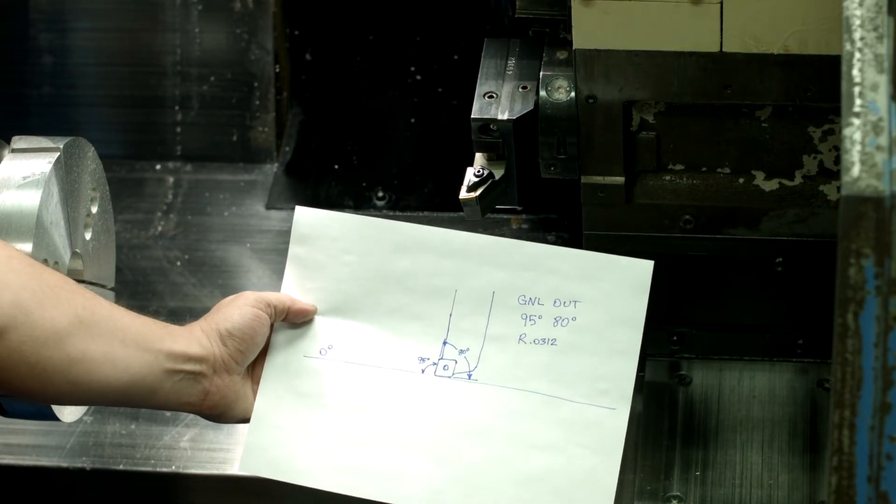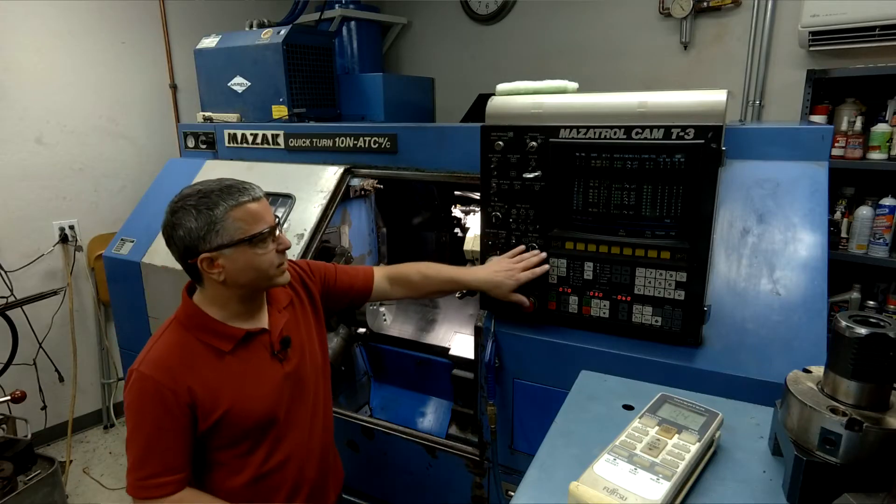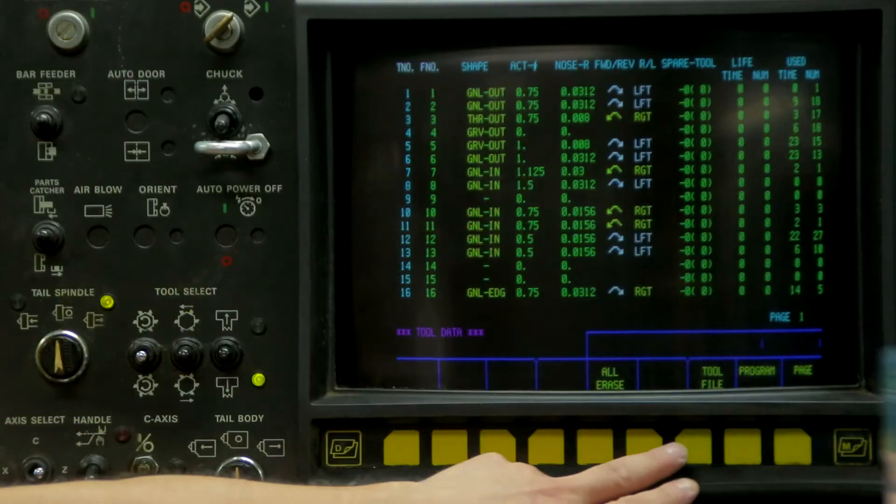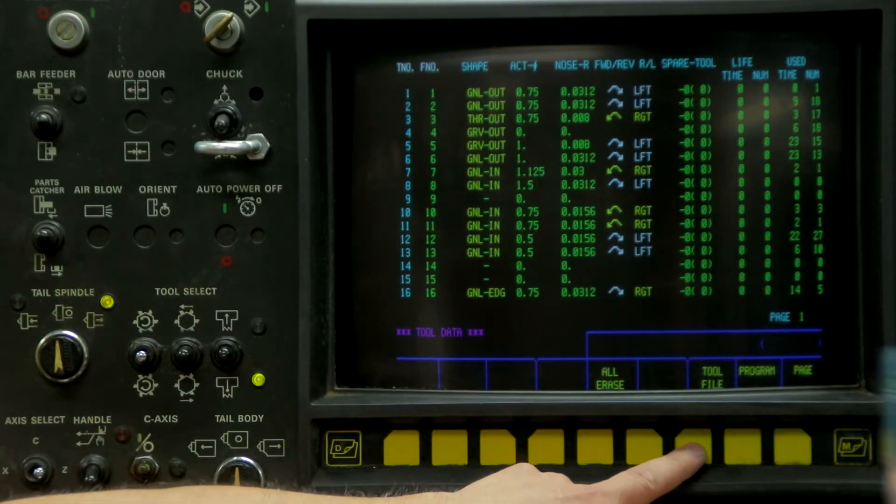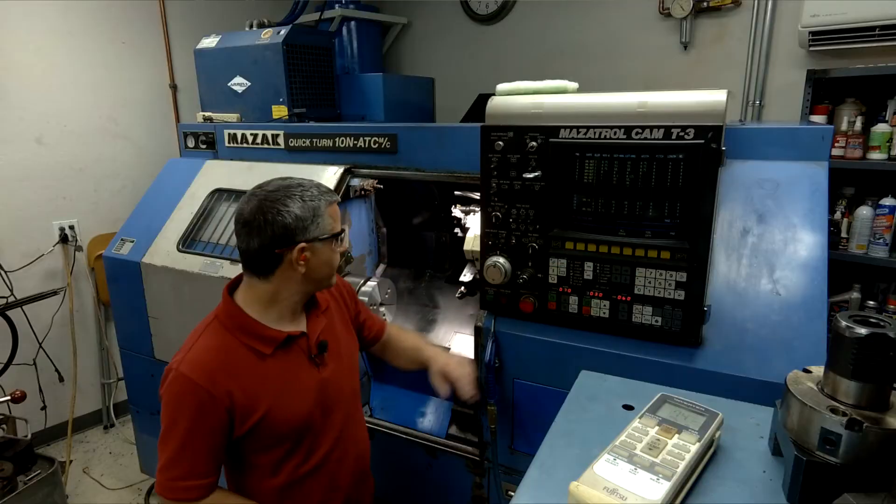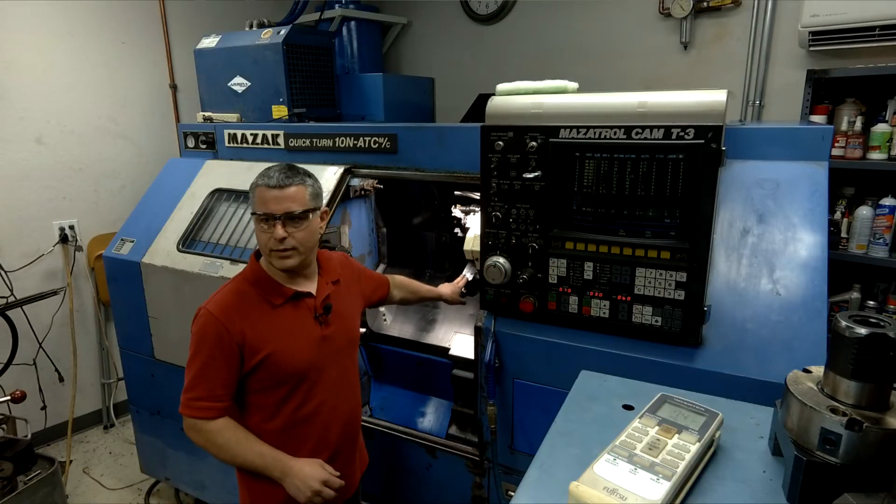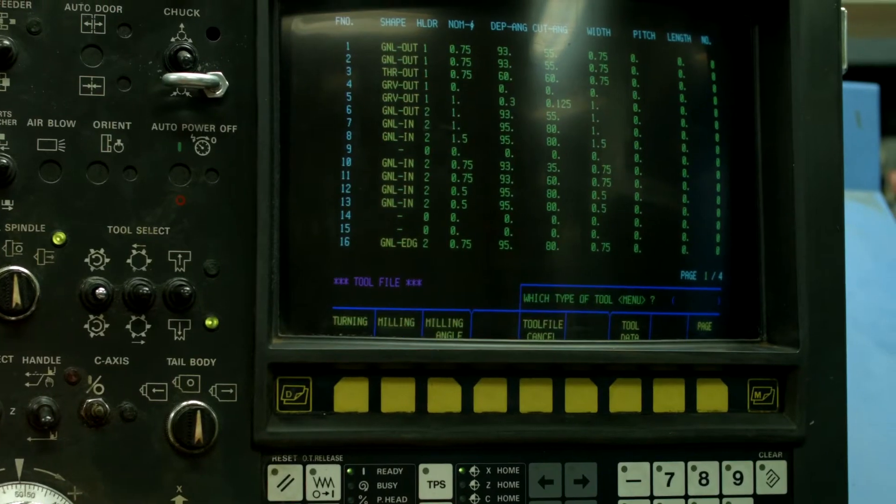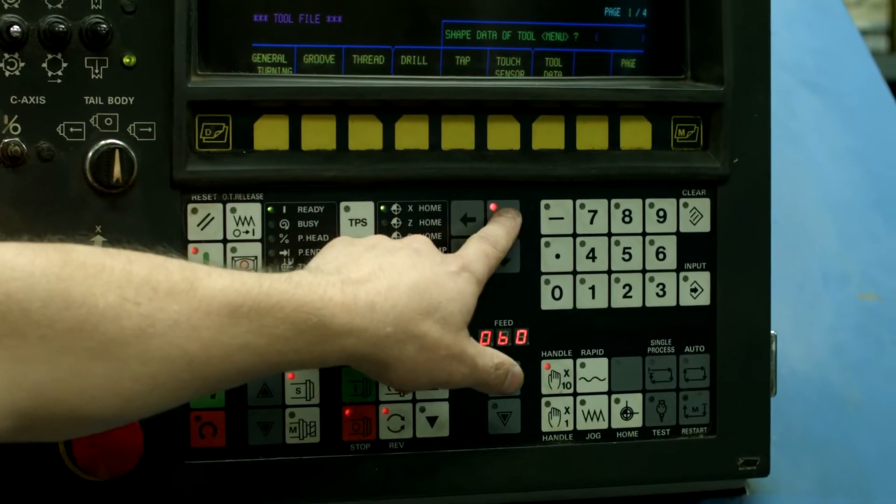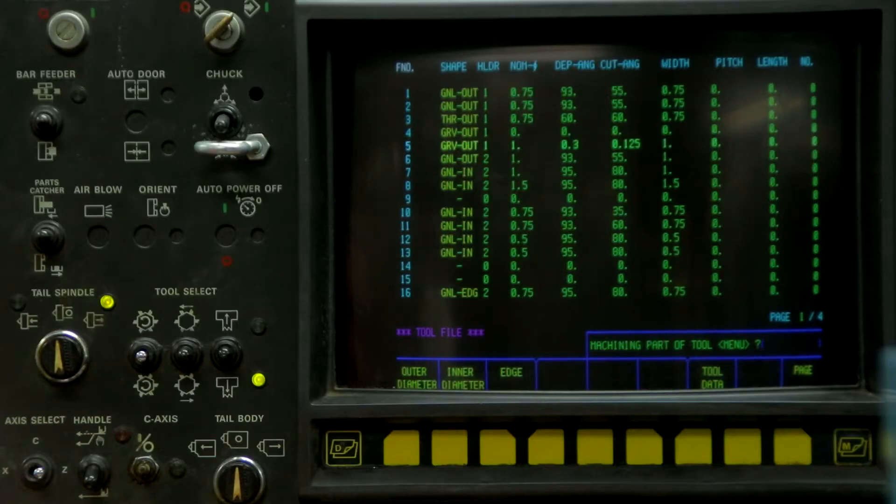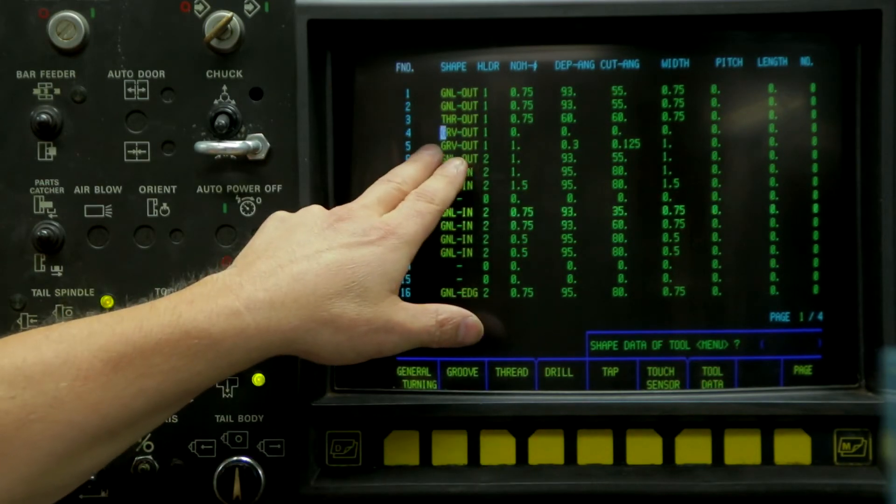So let's go ahead and put it in the control. So now from the control page, we're going to go to tool file. This is tool number 4, so we're going to arrow down to tool 4, and we're going to overwrite what's in here now.